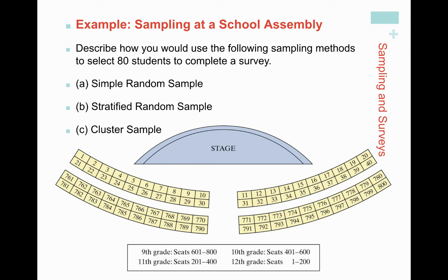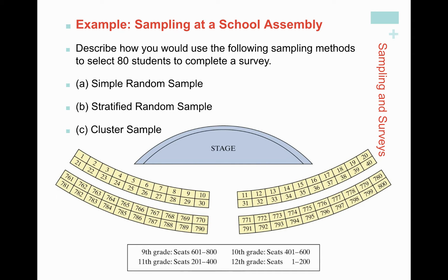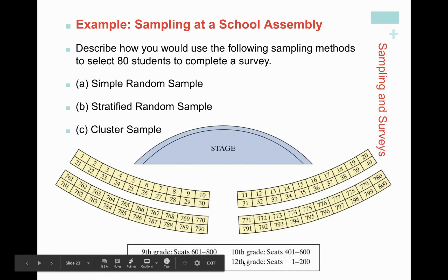How would a stratified random sample work? Well, are there homogeneous subgroups? Yes — grade level. Out of 80, let's say I want 20 9th graders, 20 10th graders, 20 11th graders, and 20 12th graders. They're already broken up into strata: seats 001 to 200, 201 to 400, 401 to 600, and 601 to 800. So I'd take an SRS of size n equals 20 from each one of those different strata.